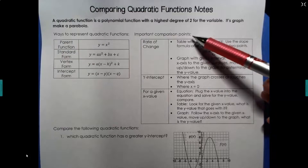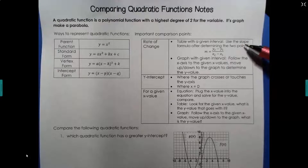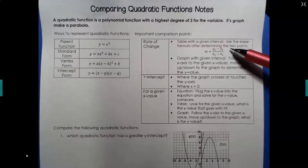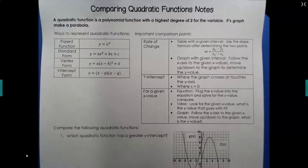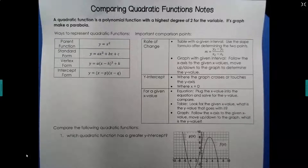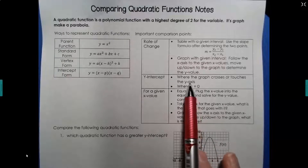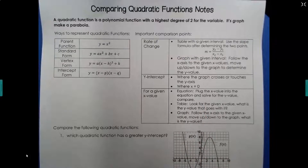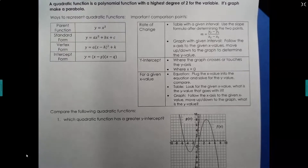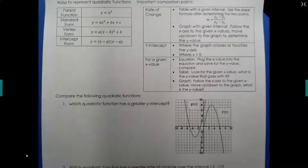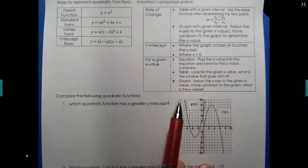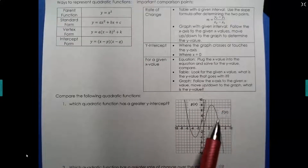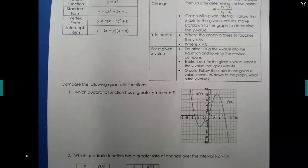We're going to use a lot of the same comparison points. For rate of change, if you have a table of values with a given interval, remember the interval is x values. Find those x values, find their matching y values, then plug them into the slope formula. If you have a graph, follow the x-axis to the given x values and move up or down to reach the graph to find the y values. The y-intercept is where the graph crosses the y-axis — that's where x equals 0. For a given x value, plug it into the equation and solve for y, look it up in the table, or follow the x-axis on the graph to find the corresponding y value.